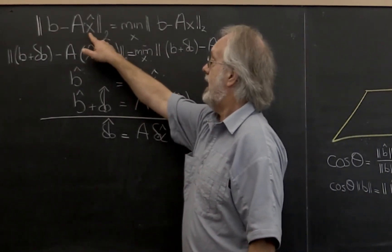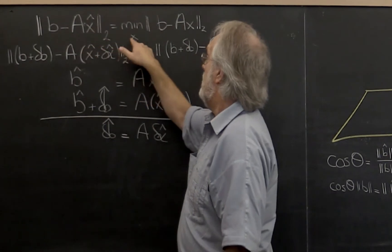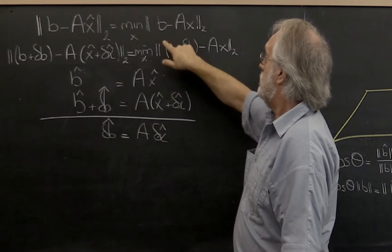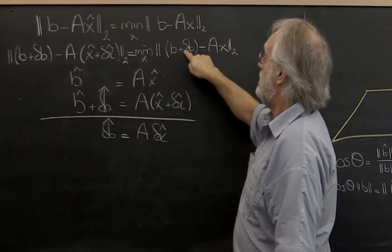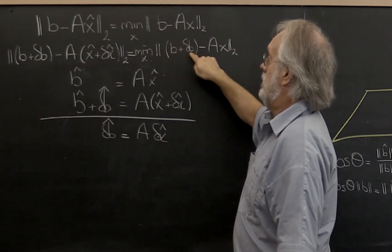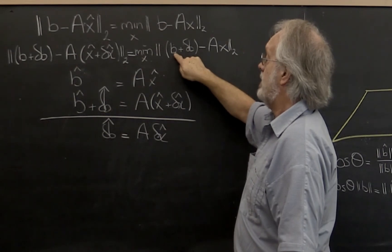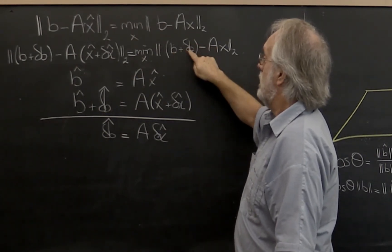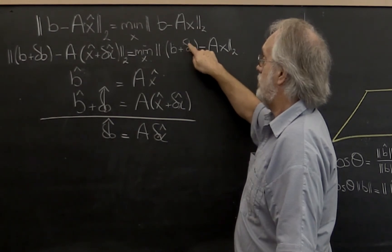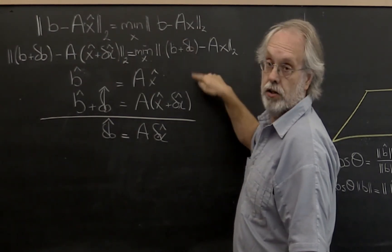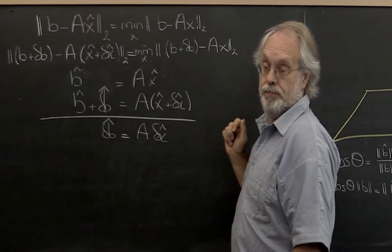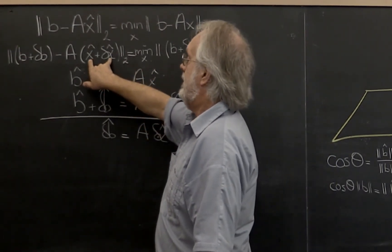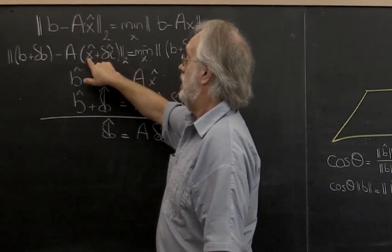We're looking for x̂ that minimizes this expression. What we now want to do is ask: what happens if we make a minor change to the right-hand side vector b? Let's call that δb. We're using δb touching to indicate that this is a whole vector of small changes. What we then get is a change in the solution.